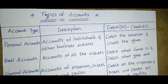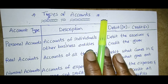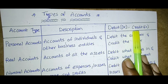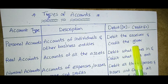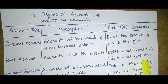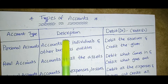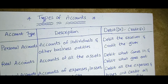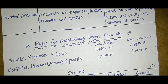We have to identify the type of account. The types of accounts are: Personal accounts — accounts of individuals and other business entities; debit the receiver, credit the giver. Real accounts — accounts of all assets; debit what comes in, credit what goes out. Nominal accounts — accounts of expenses, losses, revenue, and profits; debit all expenses and losses, credit all revenue and profit. If you get a question to state and explain different types of accounts, this information is sufficient to get good marks.